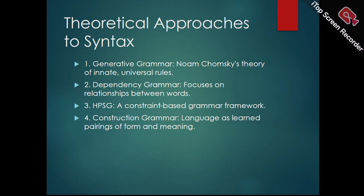Dependency grammar is a linguistic theory that focuses on the relationships between words in a sentence rather than their hierarchical structure. Each word is connected directly to another word, forming a dependency relationship. At the core is the concept of a head and its dependents — the head determines the syntactic category of the phrase, while dependents modify or complement the head. For example, in 'she eats an apple,' eats is the head and she and an apple are its dependents. Dependency grammar is particularly useful for analyzing languages with free word order and for applications in computational linguistics.